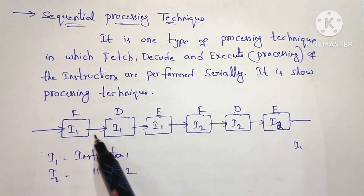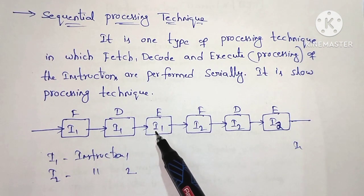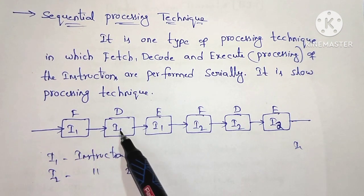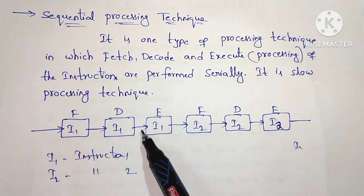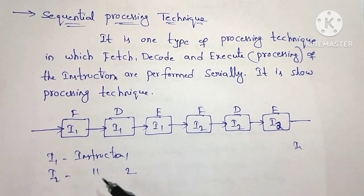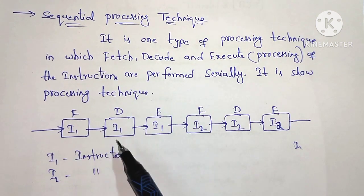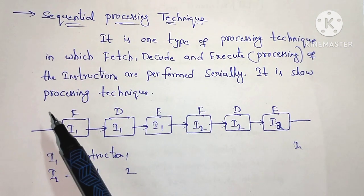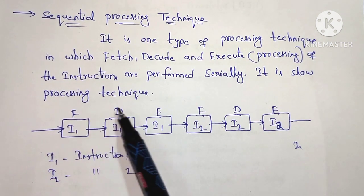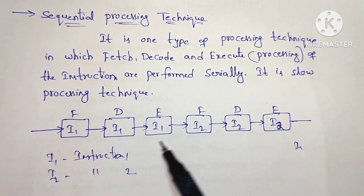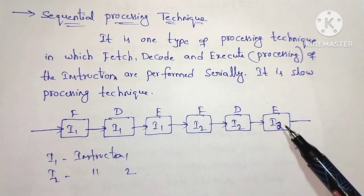We have to execute the instruction. I1 is instruction 1, I2 is instruction 2. We execute I1 with fetch, decode, execute. After completing instruction 1, we then fetch, decode, and execute the next instruction, I2.